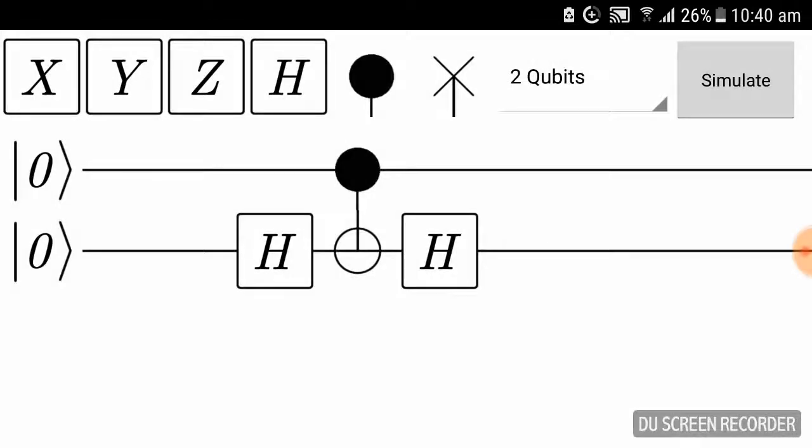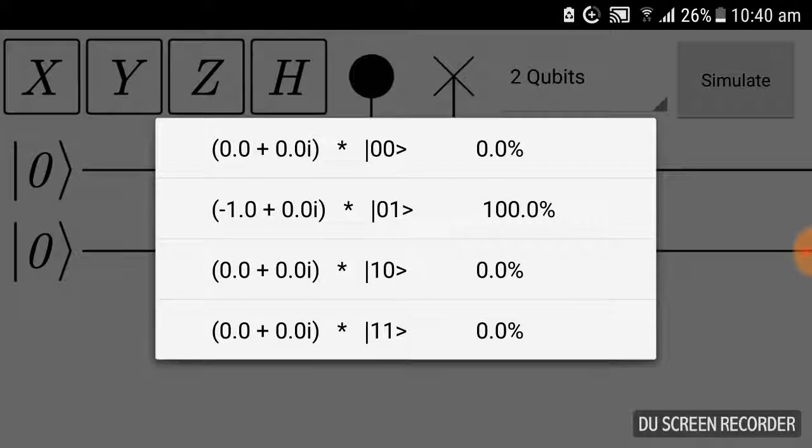We find one-one. What about if I make this one X and this one X as well? Definitely, if the first one is zero, then zero-one will be our result.